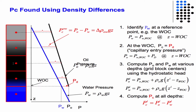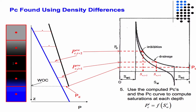We know this point, we can compute the next point, then go up the reservoir computing the pressure of oil and water for each grid block and assigning those values. The capillary pressure is just the difference in those two. So we go to our capillary pressure versus saturation curve, look at the drainage section, and read off what the saturation should be because we know the capillary pressure. That's how we initialize the reservoir.